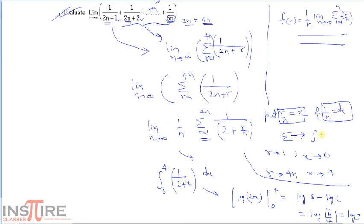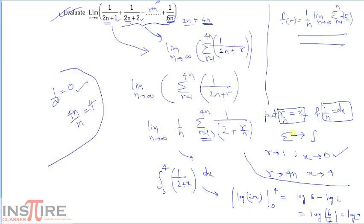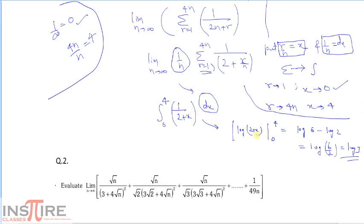We changed sigma to integral. The lower limit of sigma is 1; when r approaches 1, x = 1/n, and as n→∞, x → 0. When r approaches 4n, x = 4n/n = 4. So the integral is ∫₀⁴ 1/(2+x) dx = [log(2+x)]₀⁴ = log 6 − log 2 = log 3. Final answer: log 3.